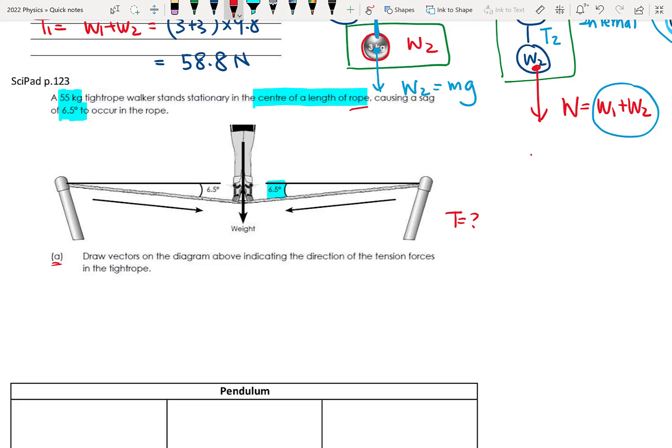So now we draw the vector on the diagram to indicate the direction of the tension on the tightrope. So the person is standing here, and he has a weight. So this is weight. And then we have two ropes. The direction of the tension is in this way. So this will be our right-hand side. And here will be left-hand side, TL.